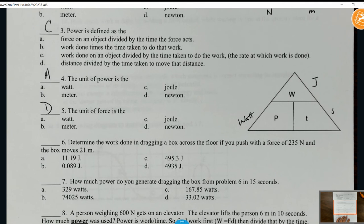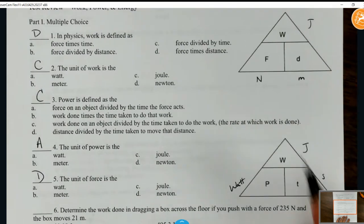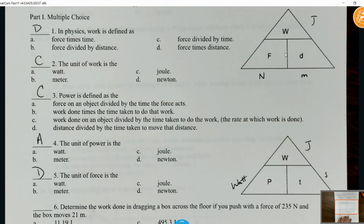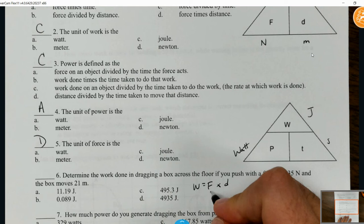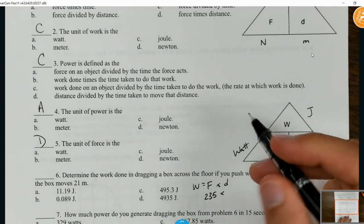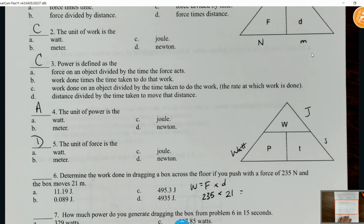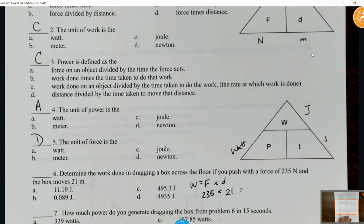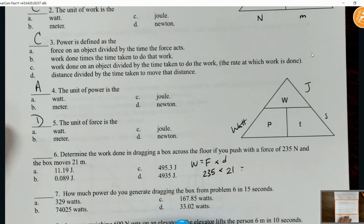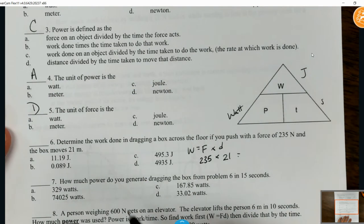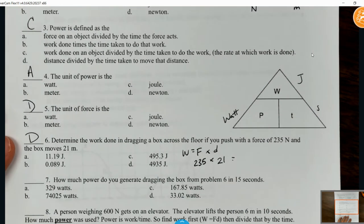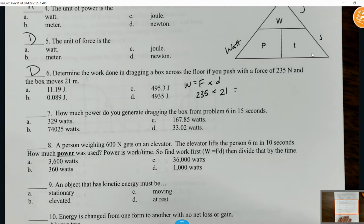Determine the work done in dragging a box across the floor if you push with a force of 235 newtons and the box moves 21 meters. The triangle up here shows work equals force times distance. You have a force of 235, multiply it by 21, and that comes out to 4935. Work is measured in joules, so we're looking at letter D.